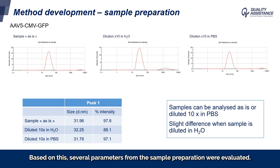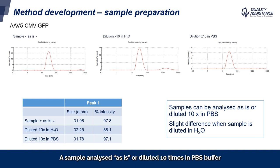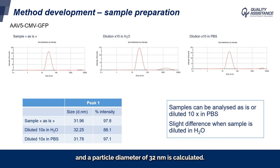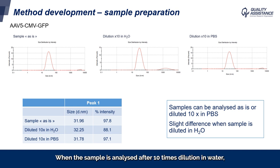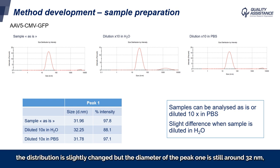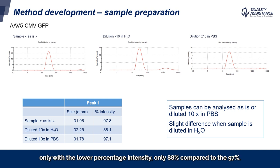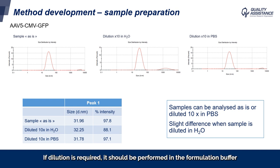Based on this, several parameters from the sample preparation were evaluated. We first checked the influence of dilution on the signal and the type of diluent. A sample analyzed as is, or diluted 10 times in PBS buffer, results in the same size distribution by intensity, with a particle diameter of 32 nanometers calculated. When the sample is analyzed after 10-times dilution in water, the distribution is slightly changed, but the diameter of peak one is still around 32 nanometers, only with a lower percentage intensity of 88% compared to 97%. Based on this, it was decided to analyze the samples as is. If dilution is required, it should be performed in the formulation buffer to avoid any changes to the aggregation status.